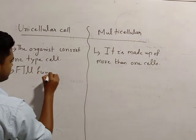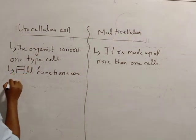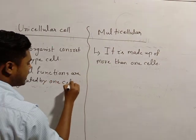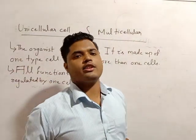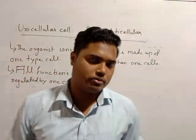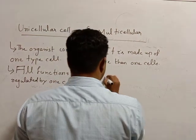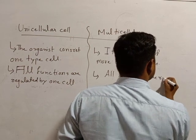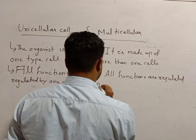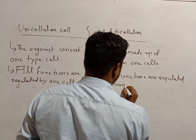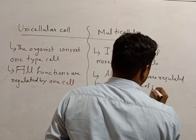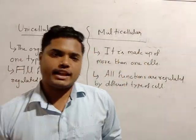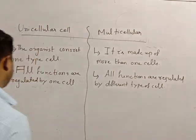Here in unicellular organisms, all functions are regulated by one cell. In multicellular organisms, all functions are regulated by different types of cells. If we have multicellular organisms, we have digestive cells, respiration cells - so different functions have different cells.